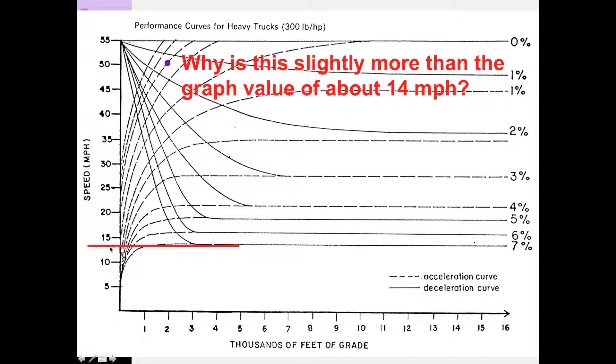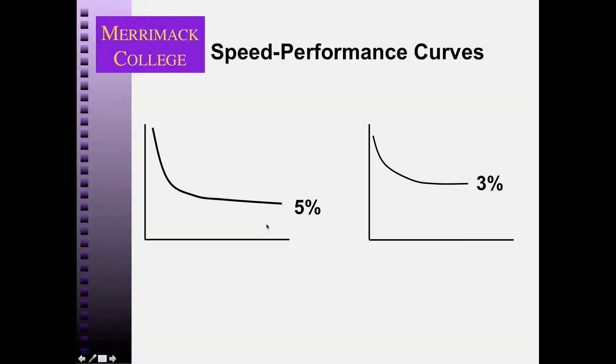So the exit speed is the key here for determining composite grades. Okay, so let's take a look at this idea. So we have exit speed versus length of grade and any given grade. So if I have 1,500 feet of 5% grade, a truck would traverse that distance on a 5% grade and exit at 40 miles per hour.